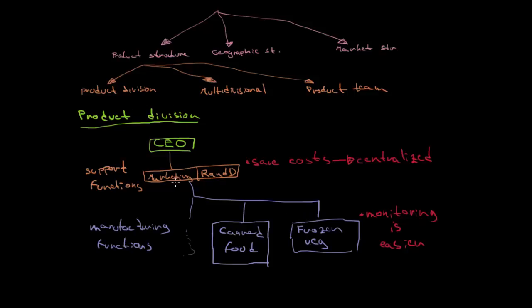This was the short idea of product division structure. What is important to remember is that the support functions are centralized so we can save some costs, and manufacturing functions are split according to different product lines.